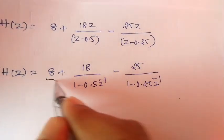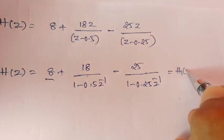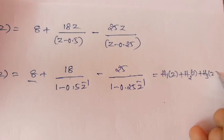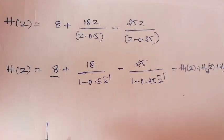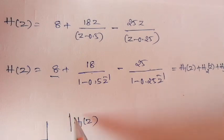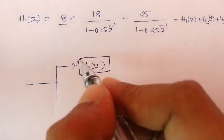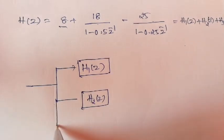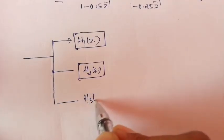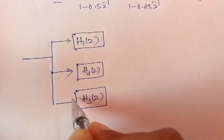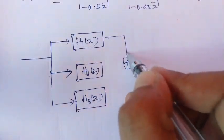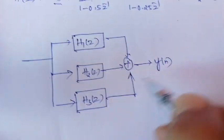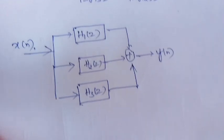This means we have three system functions: H1(z), H2(z), and H3(z). The given input sequence is applied simultaneously to all three system functions in parallel, and we add all three outputs to finally get y(n).